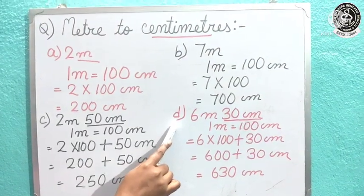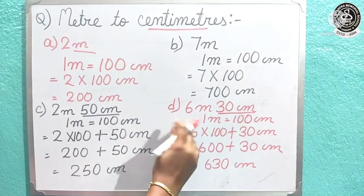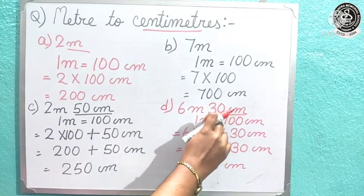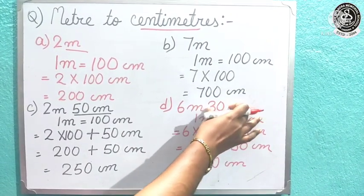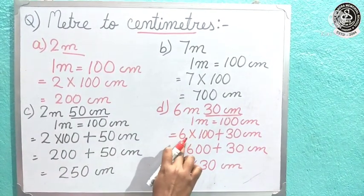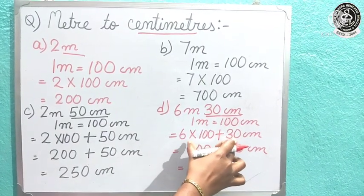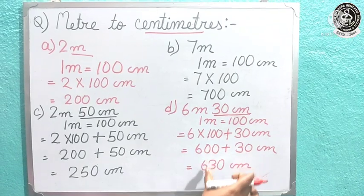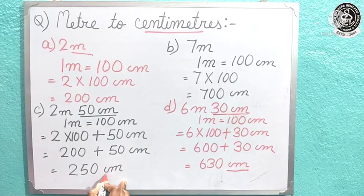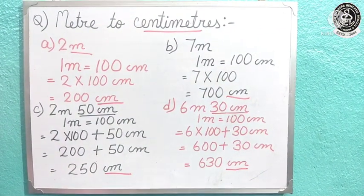So 600 plus 30 centimeter, and the total we get is 630 centimeter. To recap: 6 meter 30 centimeter is given — the 6 is in meter, the 30 is already in centimeter, so we keep the 30 as it is and multiply the 6 by 100, then add the given centimeter. 600 plus 30 equals 630 centimeter. Always write the unit — never forget to write the unit.